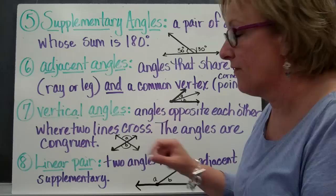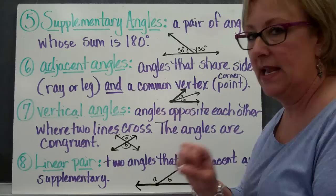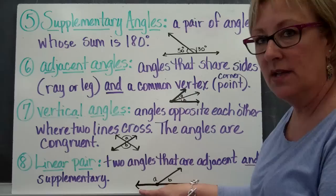Linear pair — this may be something new to you — but this is going to be two angles that are adjacent and supplementary. So it's two angles that are adjacent, just like up here, and they make a 180-degree line.